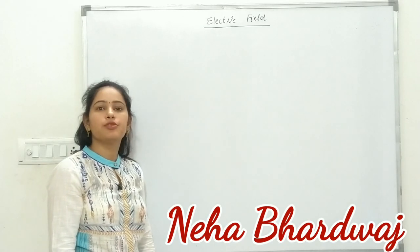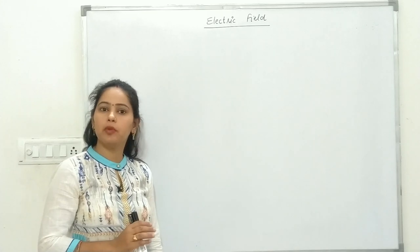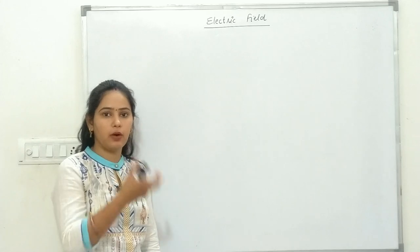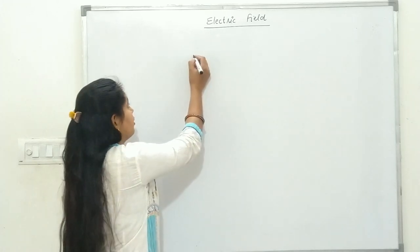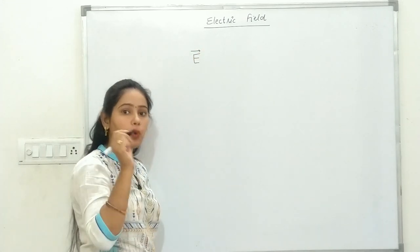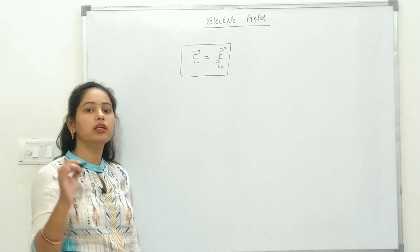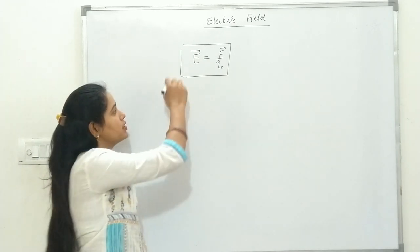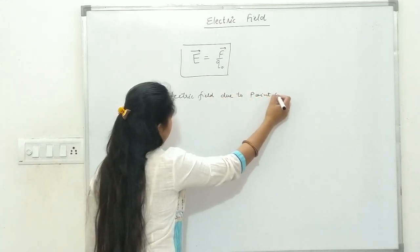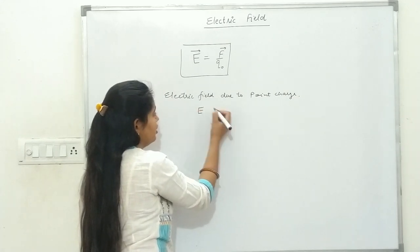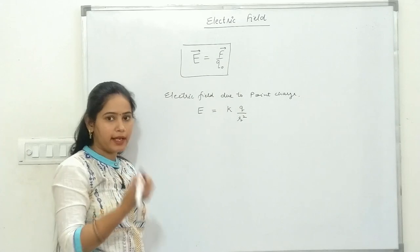Hey everyone, welcome back to my channel. This is the sixth lecture of Chapter 1: Electric Charges and Fields. Last lecture mein aapne padha tha electric field ke baare mein, electric field strength ke baare mein. Electric field kya tha — the space around the charge in which any other test charge will experience some force. Electric field strength is equal to force experienced by any charge per unit charge. And electric field due to a point charge: E is equal to kQ by r square.